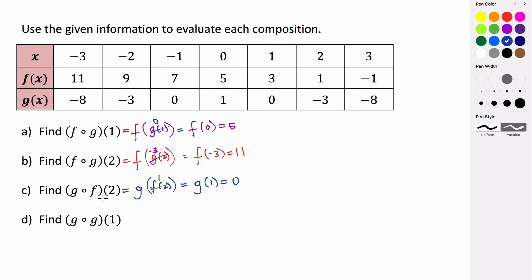What's interesting about function composition is you can actually compose a function with itself. This is g of g of 1 — we're taking g and evaluating it at g of 1. We go to 1 for our input, and the output for g when x is 1 is 0. So we need g of 0. The input is 0, and the output for g is 1.